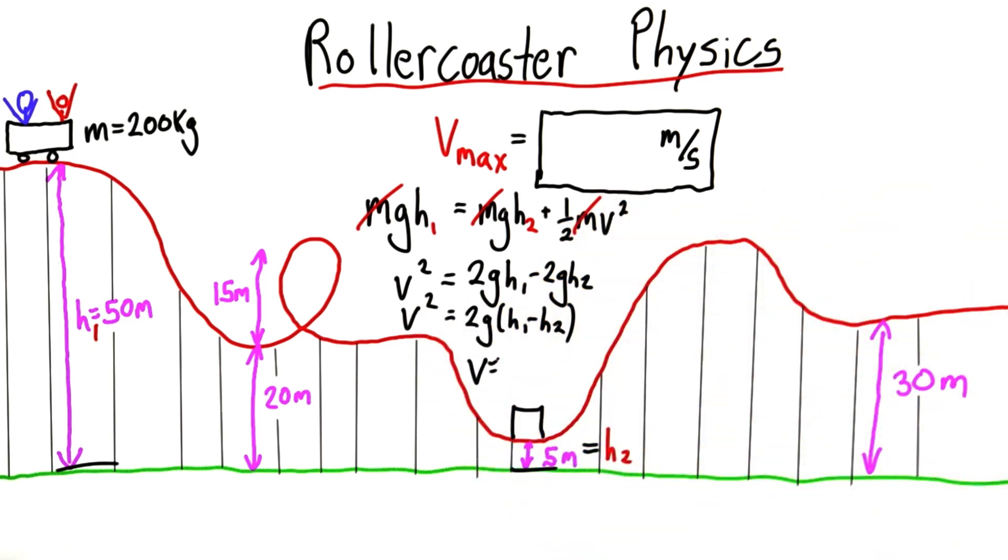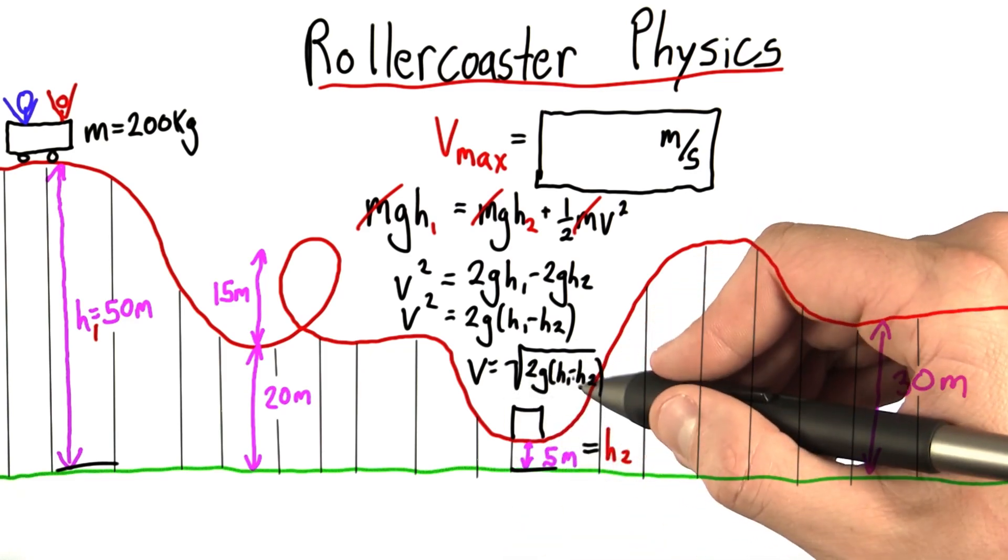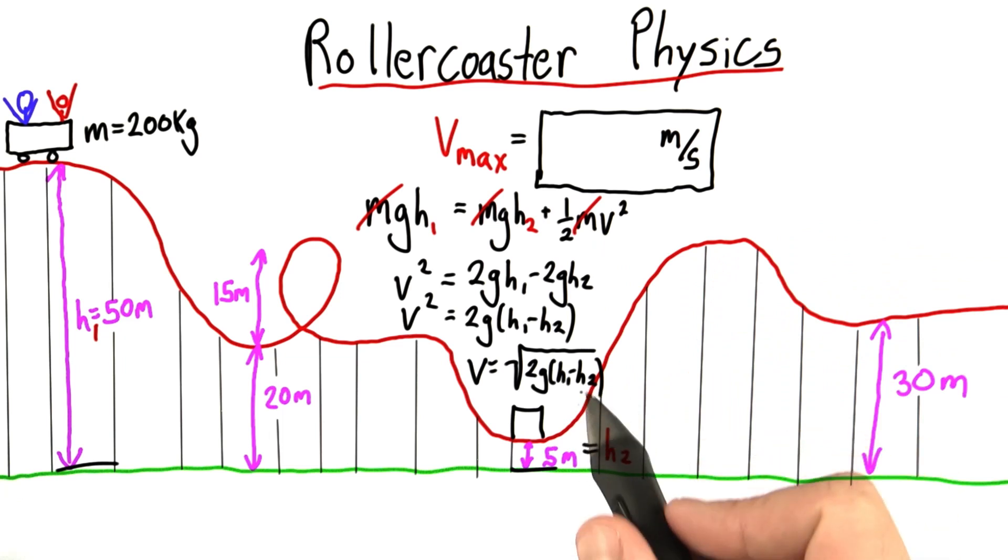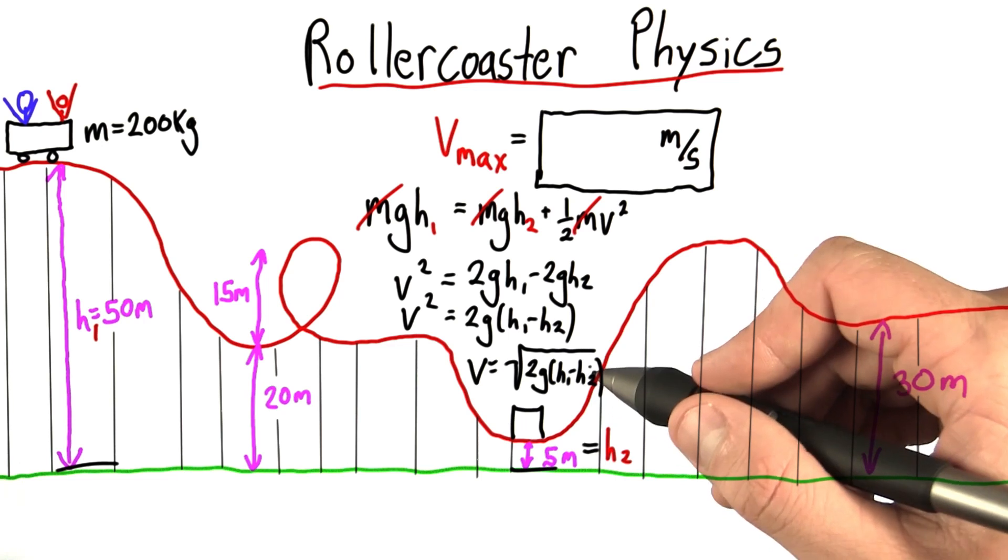Then to solve for velocity, I just take the square root, and look at that. All that matters, the only way that height comes into this equation is through the change in height, h1 minus h2. This is really pointing out the fact that we can choose our zero point anywhere, and all that matters is the change in height.